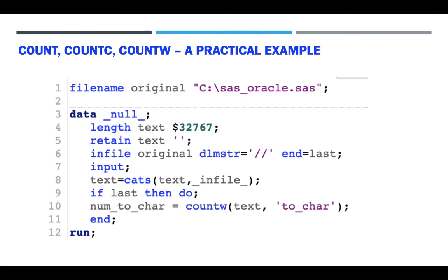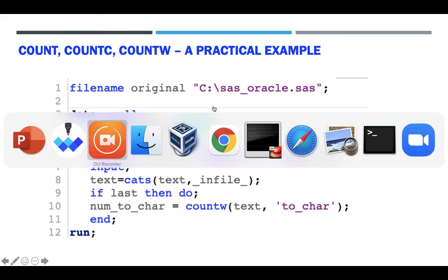I hope this gives you an example of how to use COUNT functions in a real work setting. To summarize: there are three functions — COUNT to count a substring, COUNTC to count characters, and COUNTW to count words. I hope you learned something useful today. Thank you for watching.